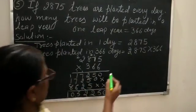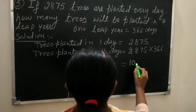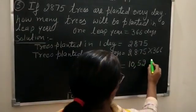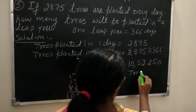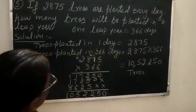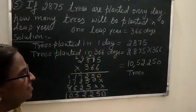So the answer is 10 lakh 52,000 250 trees planted in 366 days.